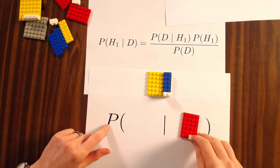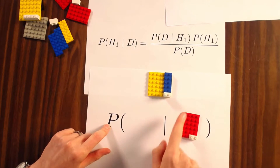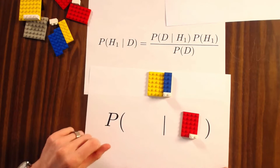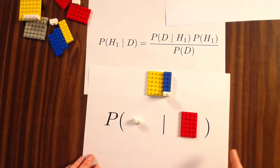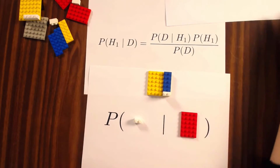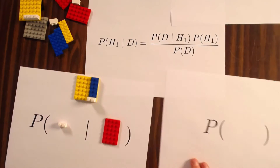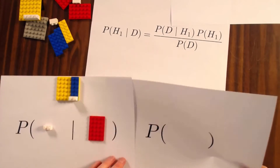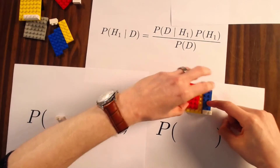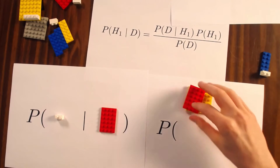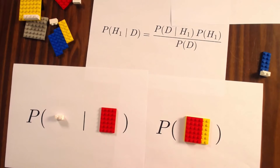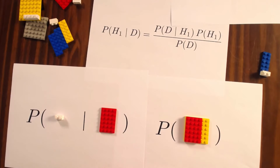We can calculate this probability as follows. This space contains 4 times 6 pegs, so a total of 24 pegs, and therefore the probability equals 2 over 24, or 1 over 12. That is the probability of the data given the hypothesis. If we want to know the probability of the hypothesis, we have to consider what the total probability space is. The probability of the hypothesis can be calculated as 24 pegs in a space of 36 pegs — 24 over 36. And that's the probability of the hypothesis.